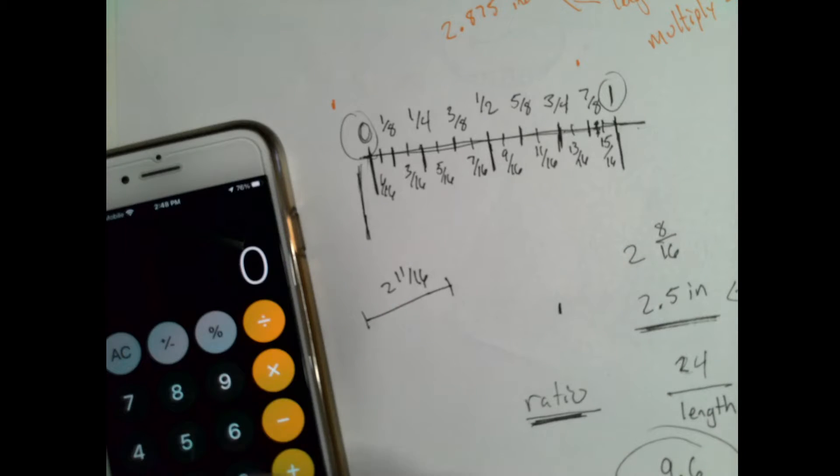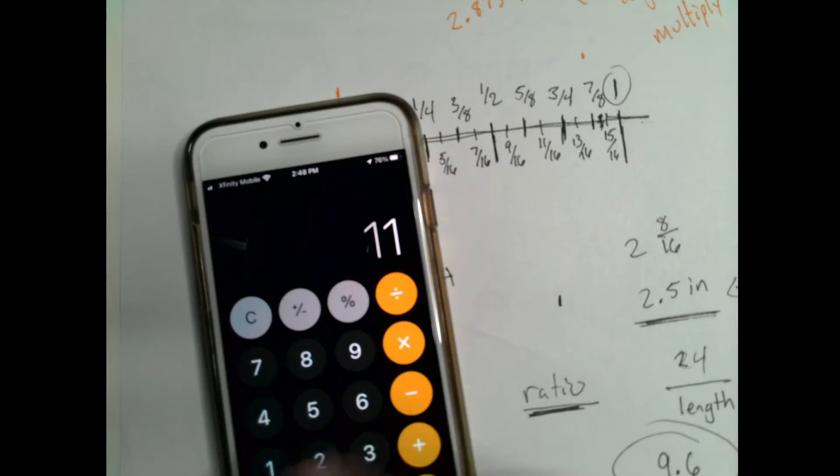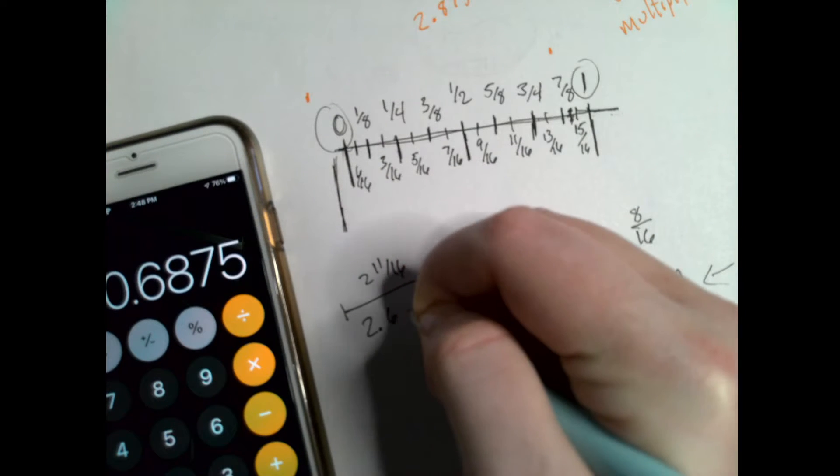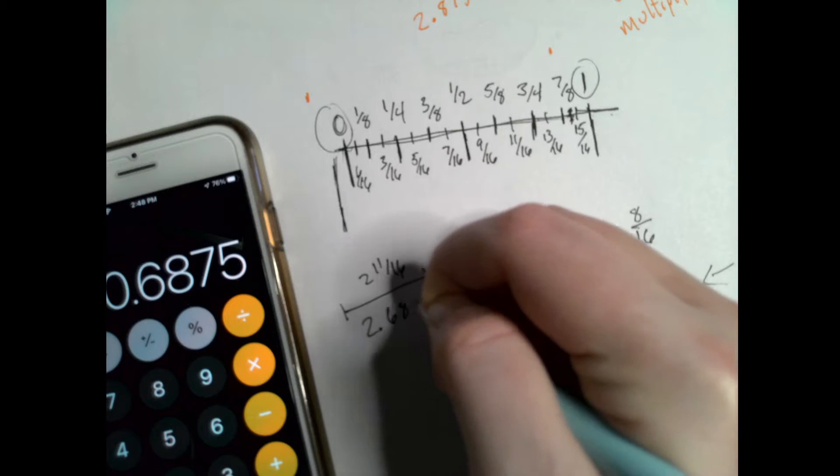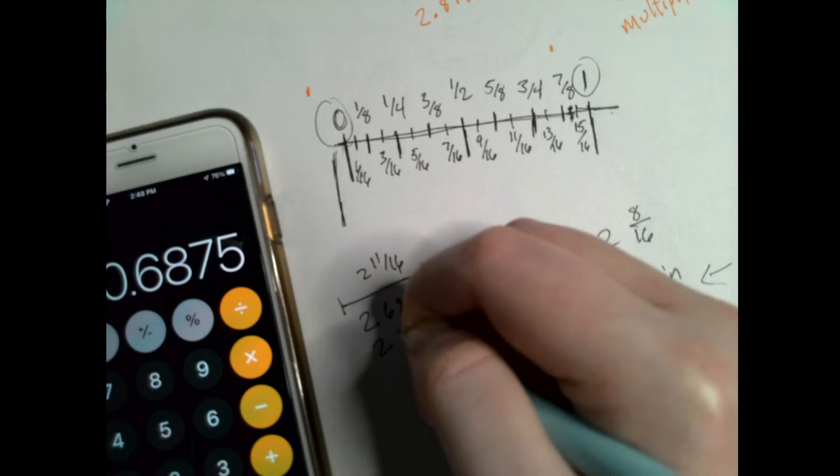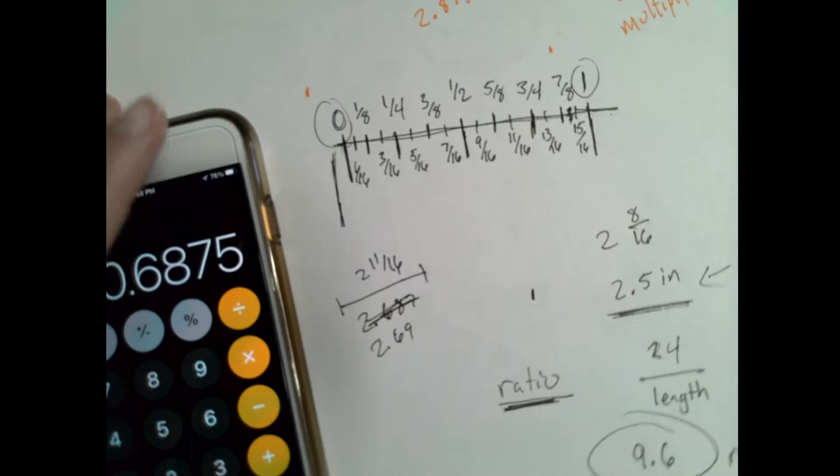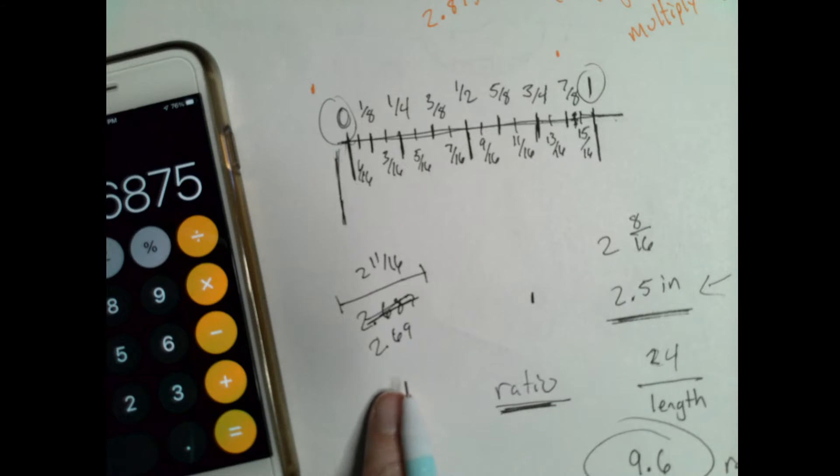Once again, I need to make sure that's a decimal, so I go 11 divided by 16. So it's 2.687 or 2.69, whatever. I'm going to go 2.69 to get the actual length that it's going to be in cardboard.